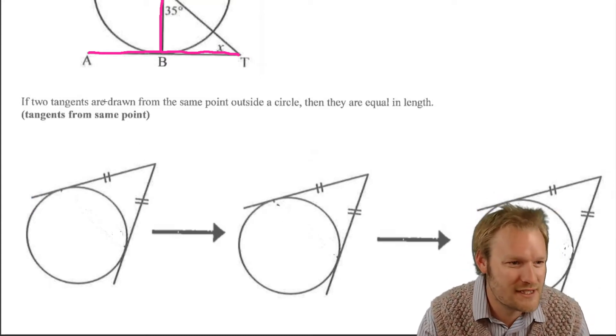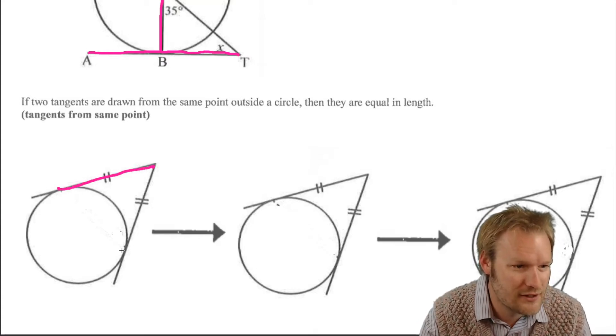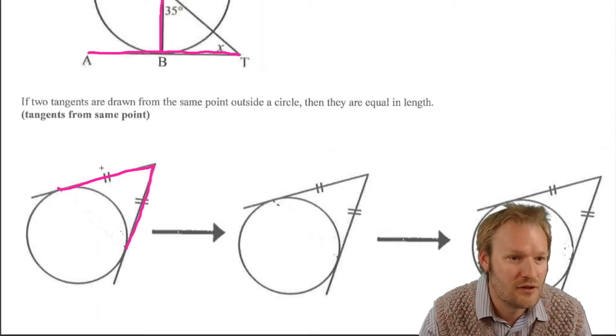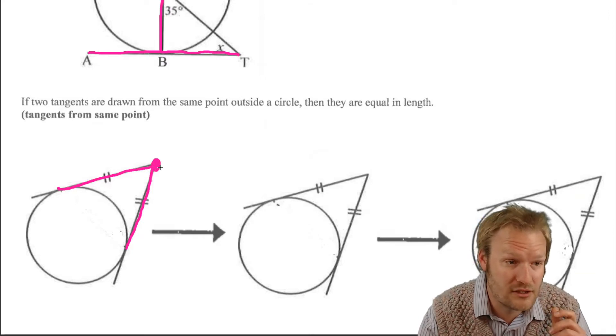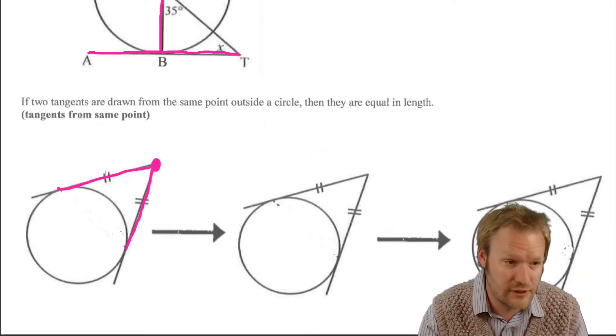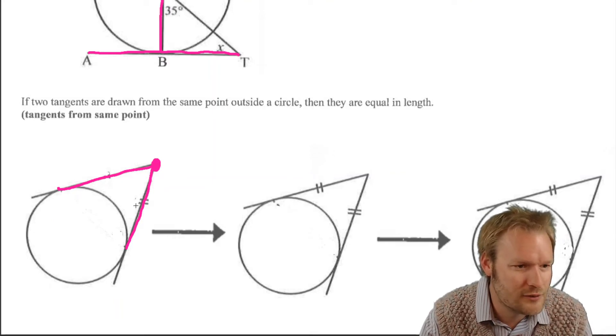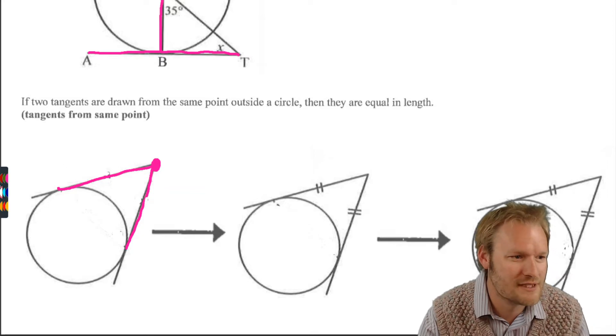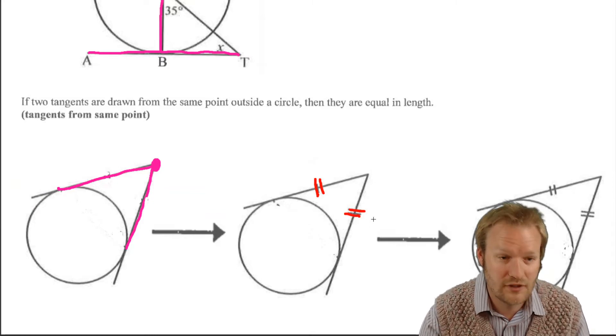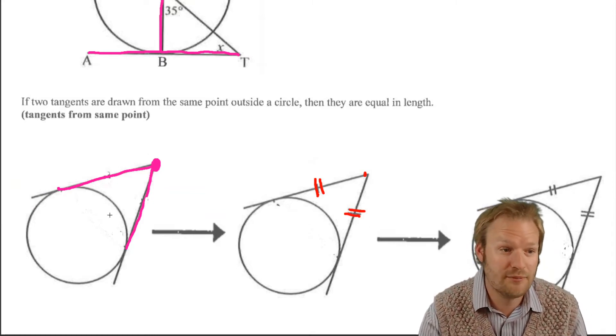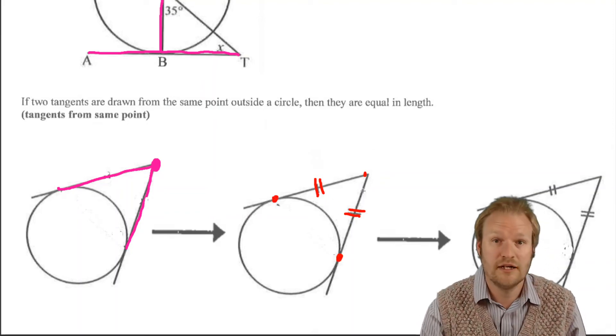And we're given that we've got tangents. So we're told that these are tangents. There they are, there's one tangent, there's another tangent, and they come from the same point. Then what we know is, well, I haven't done well here. We don't know that. We just know that we've got tangents from the same point. If they come from the same point, then we know that they are equal. So if they come from the same point, those lines must be equal up to where they touch the circle.